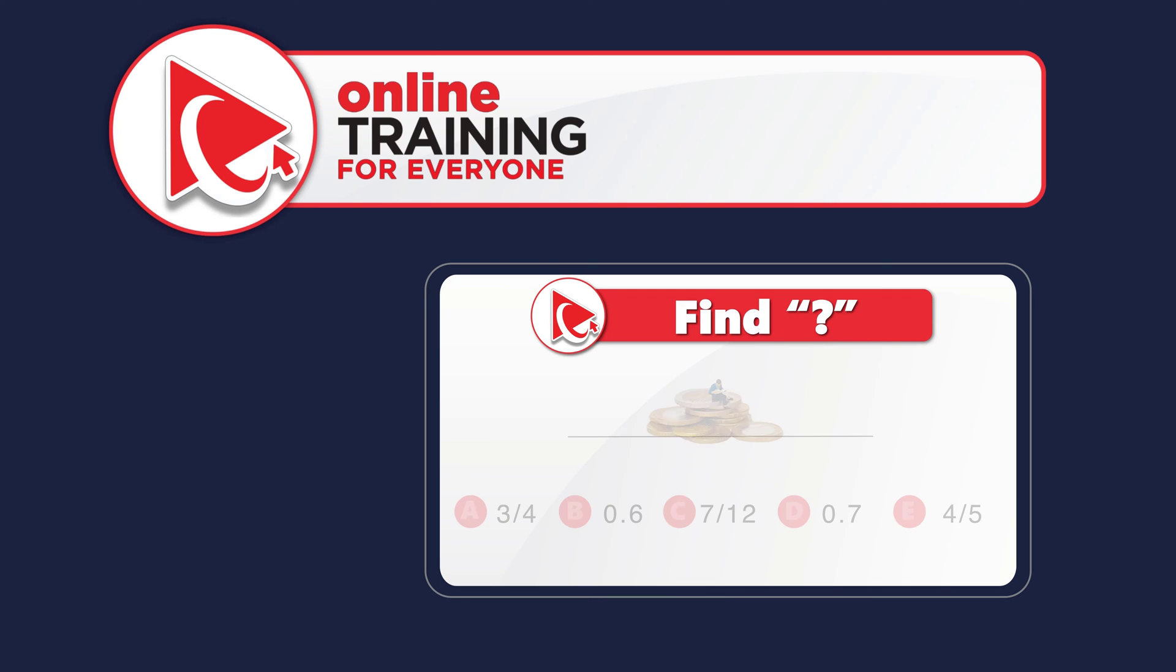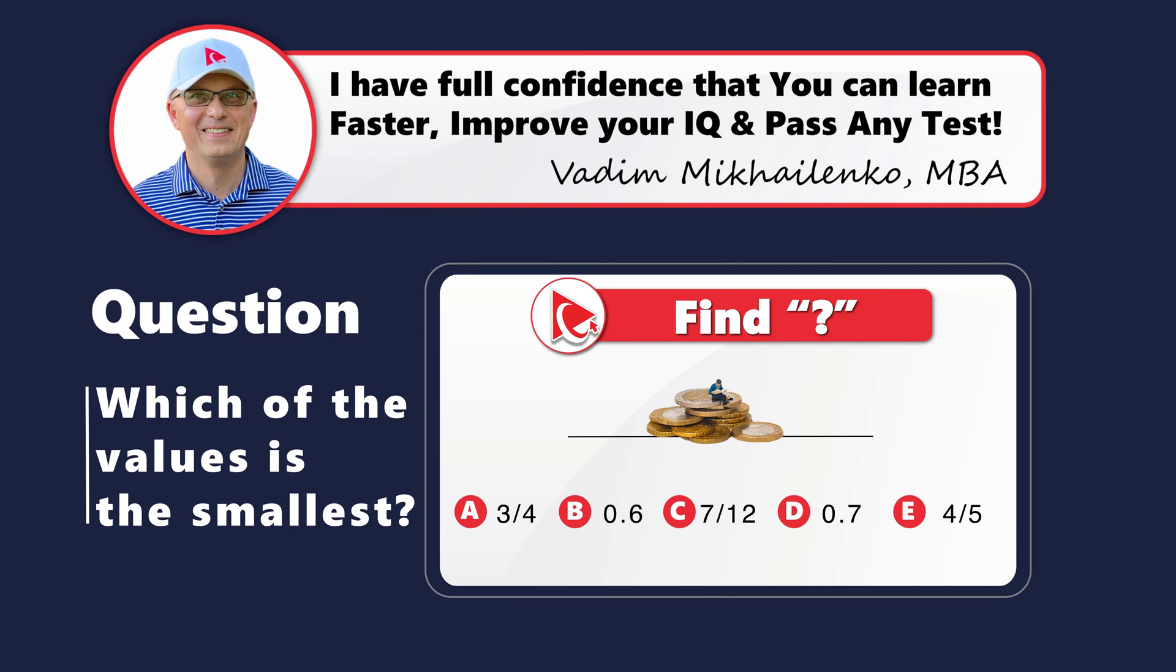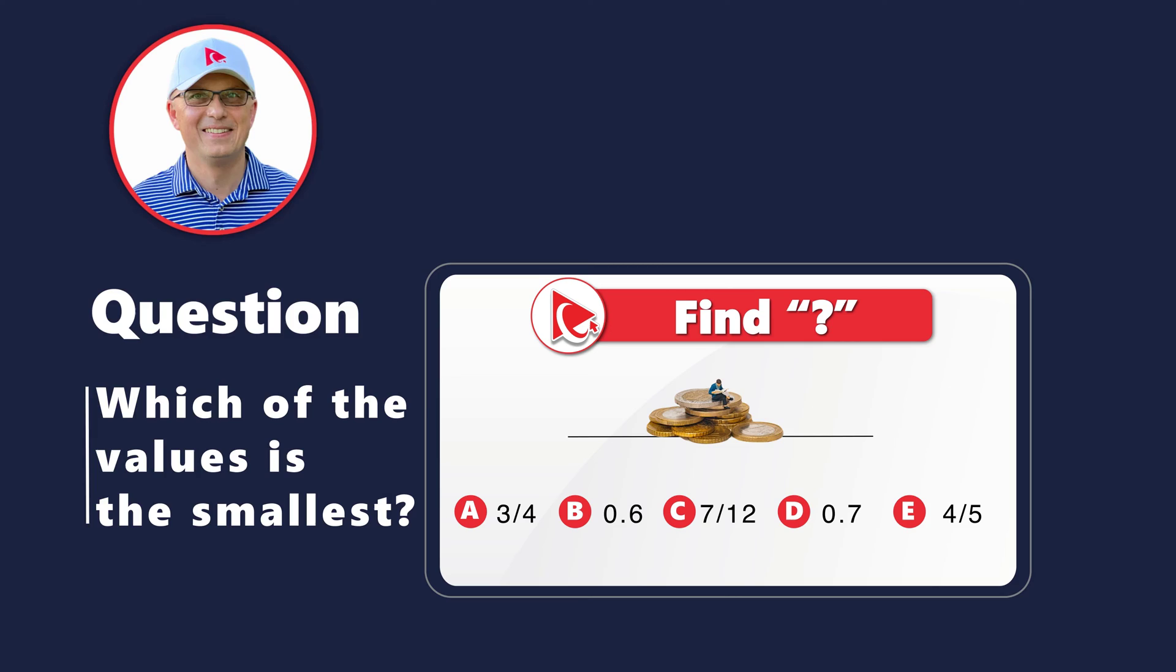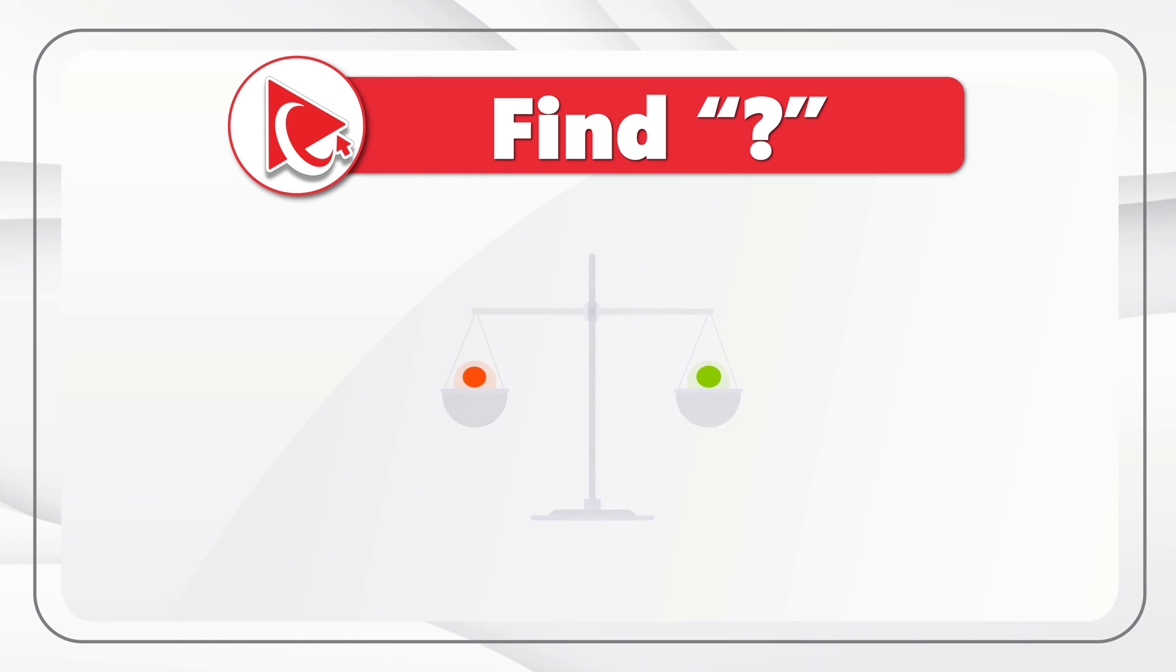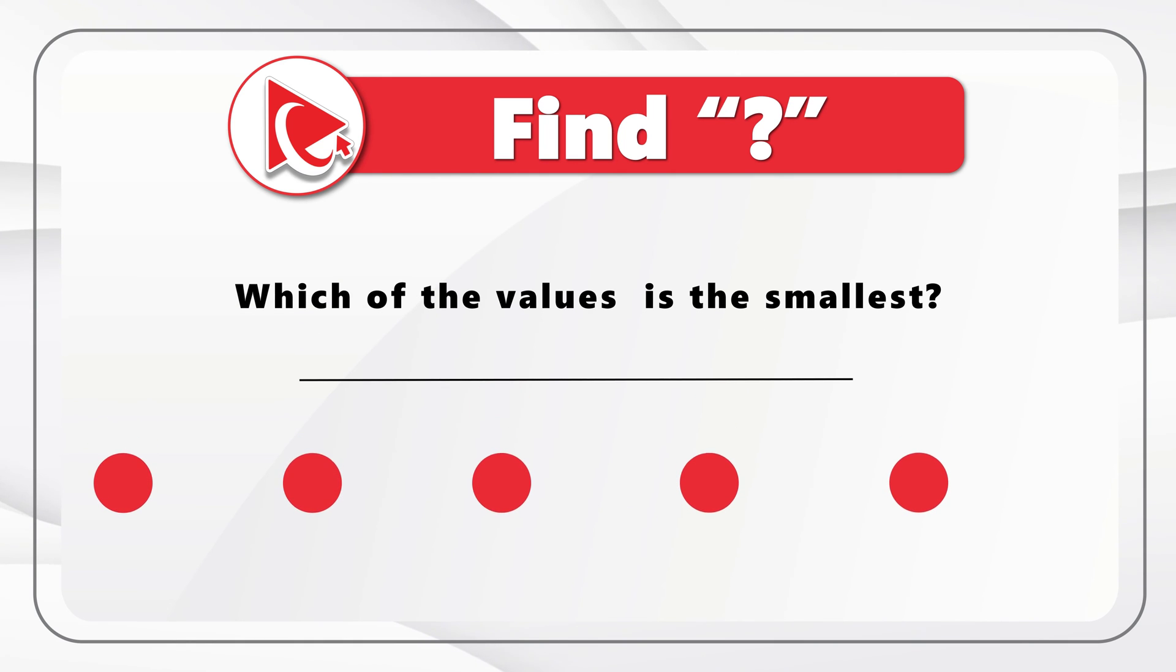Here is one of my favorite questions to test your analytical skills and attention to details. You need to determine which of the values is the smallest. And you're presented with 5 different values. The choices are 3 fourths, 0.6, 7 twelfths, 0.7, and 4 fifths. Take a close look to see if you can come up with the answer.